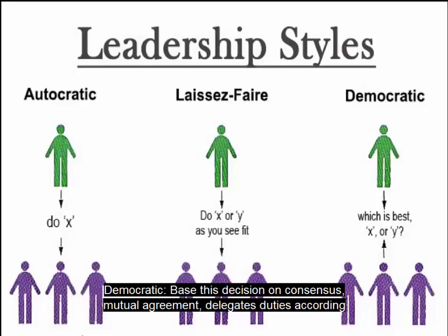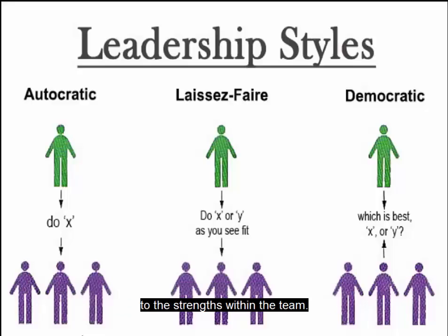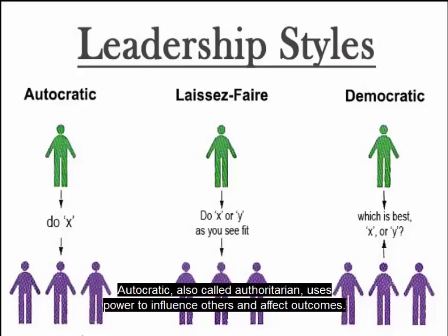Democratic leadership bases decisions on consensus and mutual agreement, and delegates duties according to the strengths within the team. Autocratic leadership, also called authoritarian, uses power to influence others and affect outcomes. Laissez-faire leadership is non-directive and deliberately intervenes as little as possible.